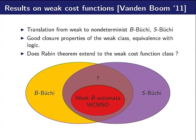So now the question is, can we extend Rabin's theorem on cost functions? Is the red class all the intersection or is it a strict inclusion?